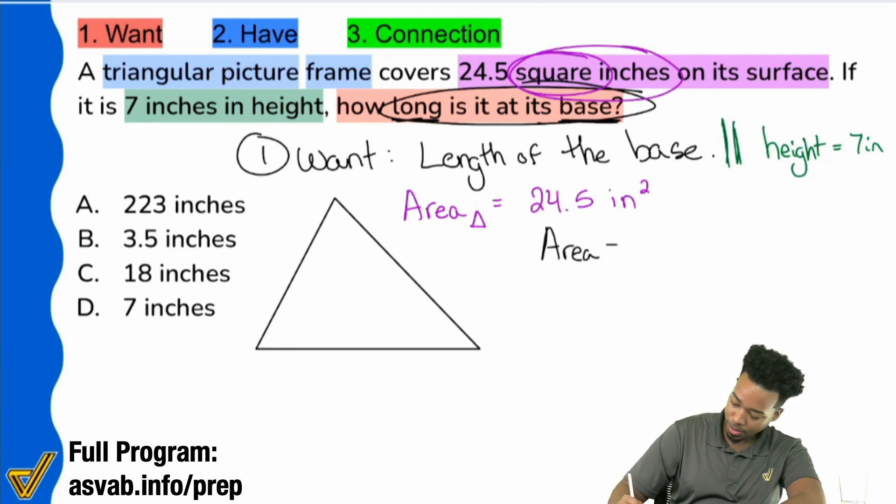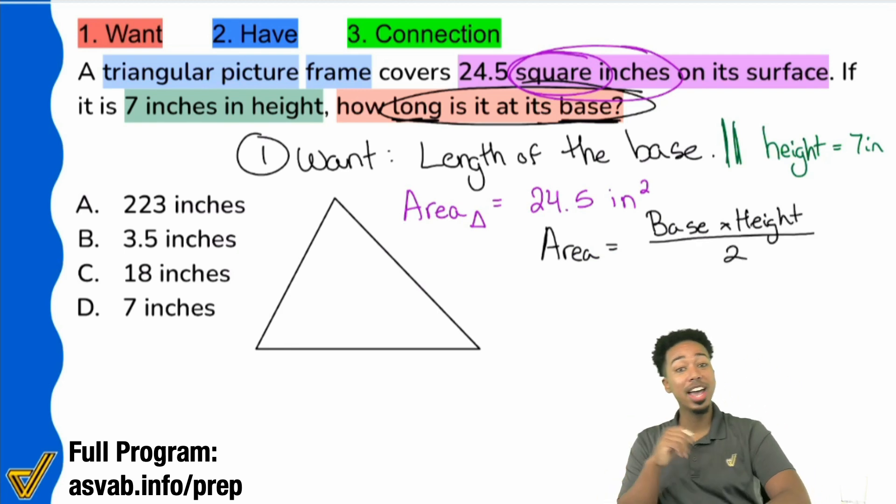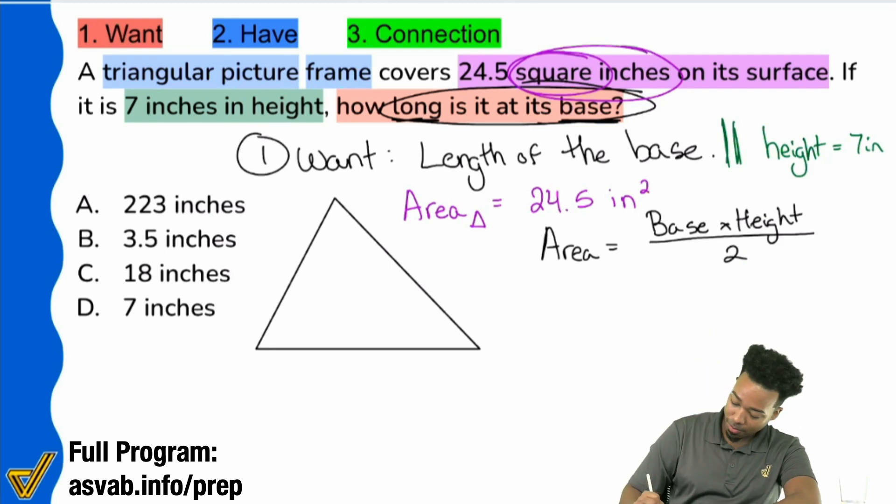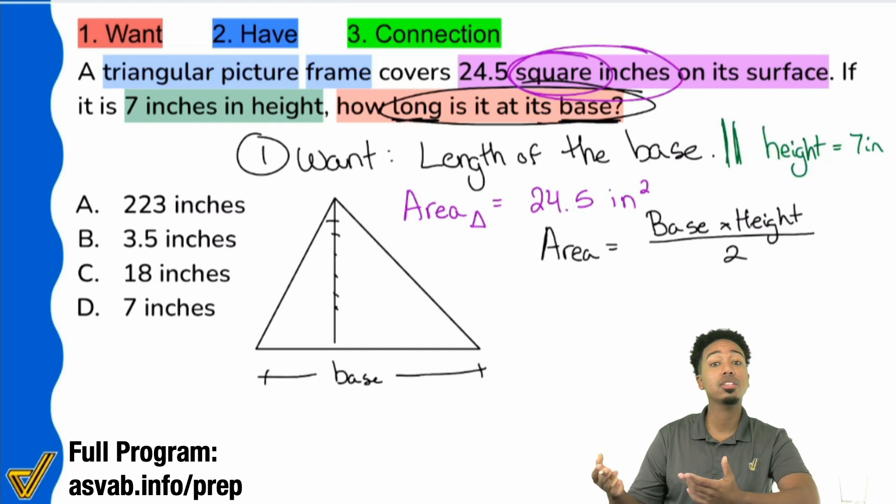The formula is going to be right over here. Area equals the base times the height all divided by two. That right there. That's what we have. And so, we have our base here. There's our height coming from the top down just like that. And then we will just plug these numbers into the formula, solve, and we're done. That's it. So let's get it done. Let's not waste time.